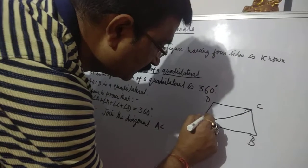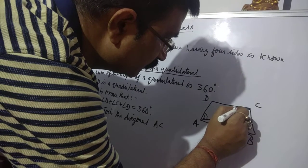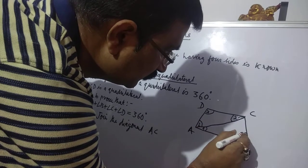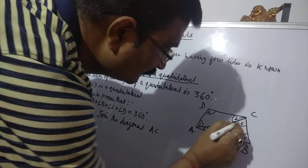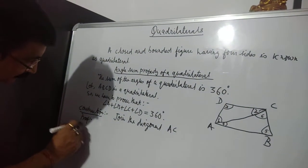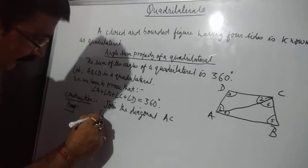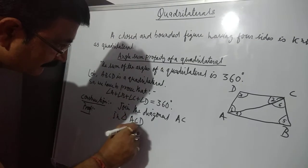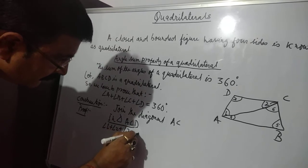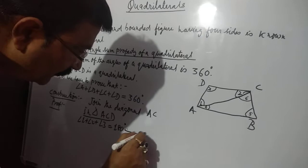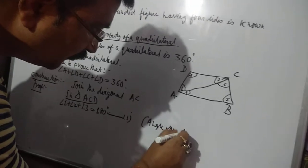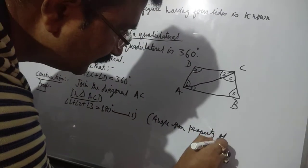Name the angles as 1, 2, 3, 4, 5, and 6. Proof: In triangle ACD, angle 1 plus angle 2 plus angle C equals 180 degrees — equation 1. This is the angle sum property of a triangle.